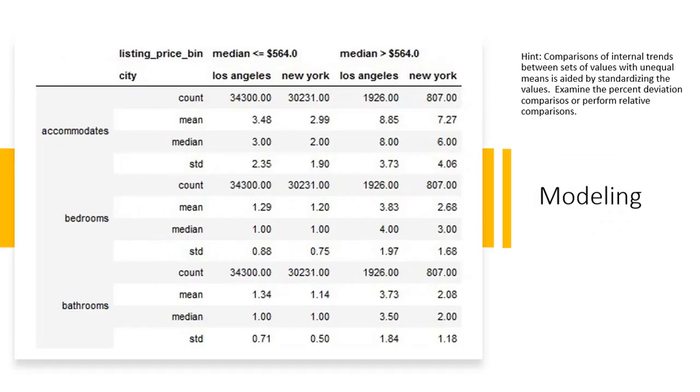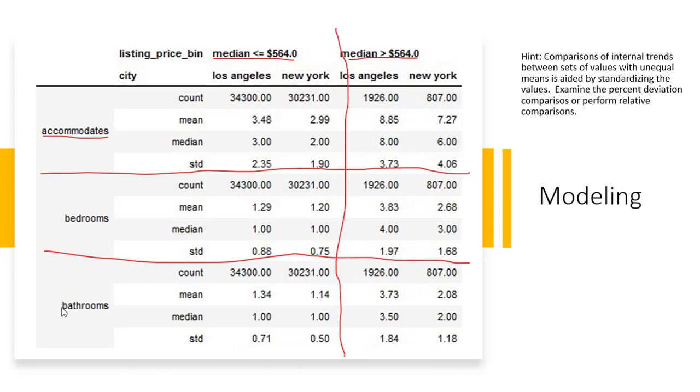Here is some of the data in a tabular format as we look to further understand the data. Let's draw a line right down here. This left side is the median less than or equal to $564. The right side here is greater than $564. So we get the number that we're looking at. The mean, and we're looking here in this first section at accommodations. So the mean is 3.48 people. The median is 3. The standard deviation is 2.35. So we calculate those same statistics for accommodations. And then bedrooms and bathrooms.